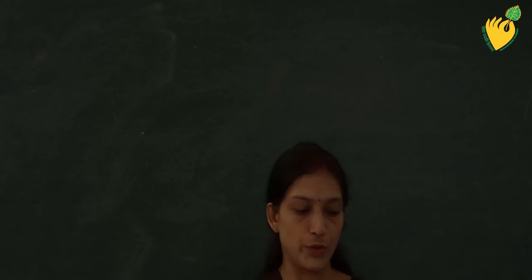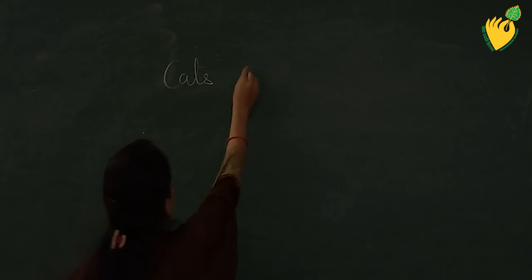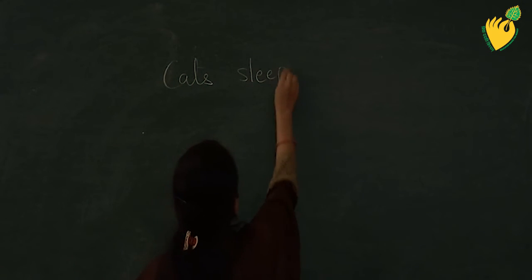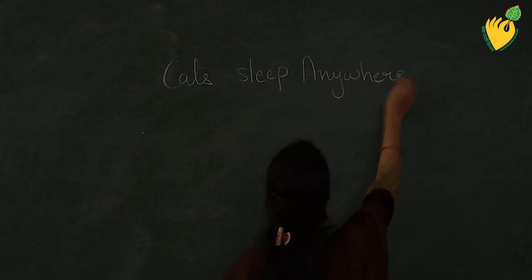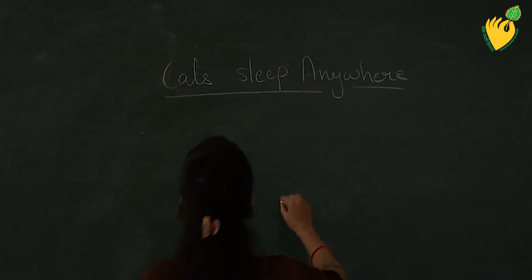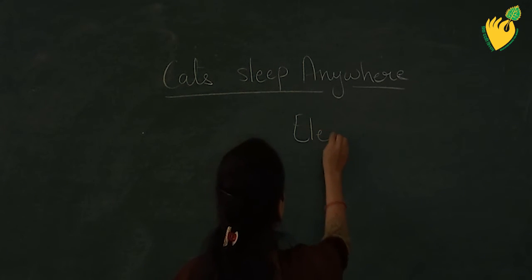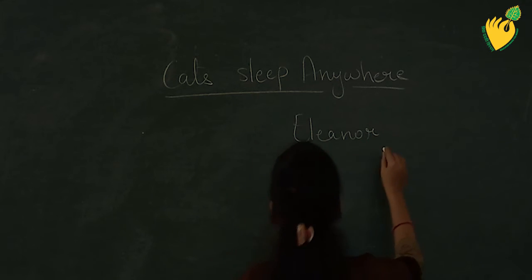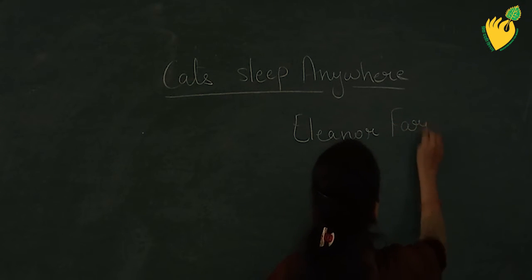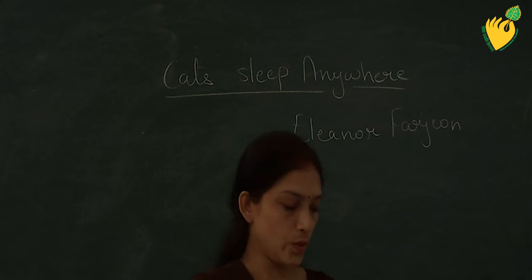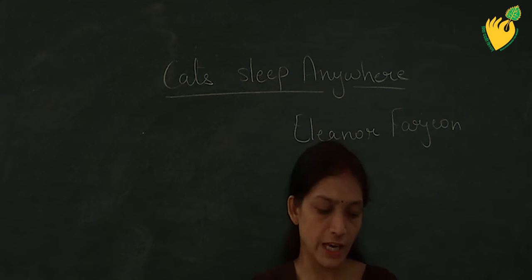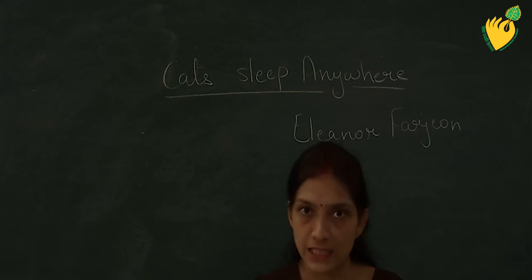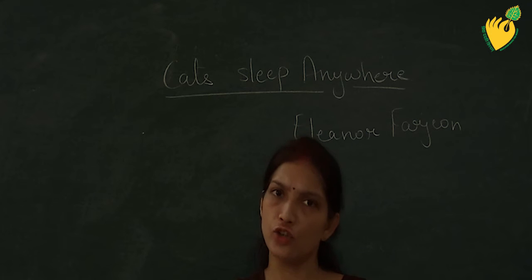So now I will explain you this poem. Cats sleep anywhere — cats can sleep anywhere where they feel like. Any table, any chair. They can sleep on any table or on any chair.